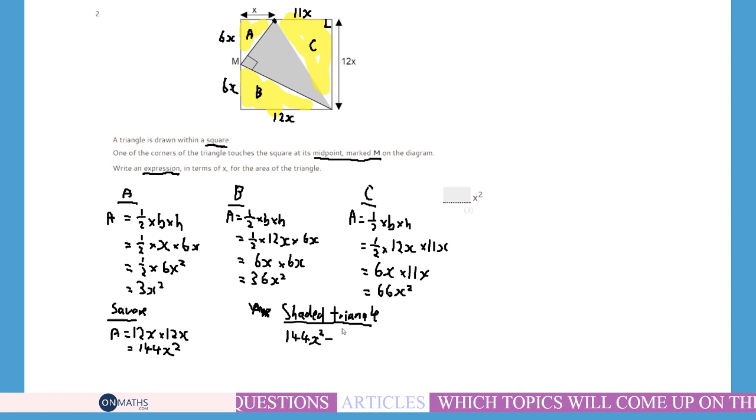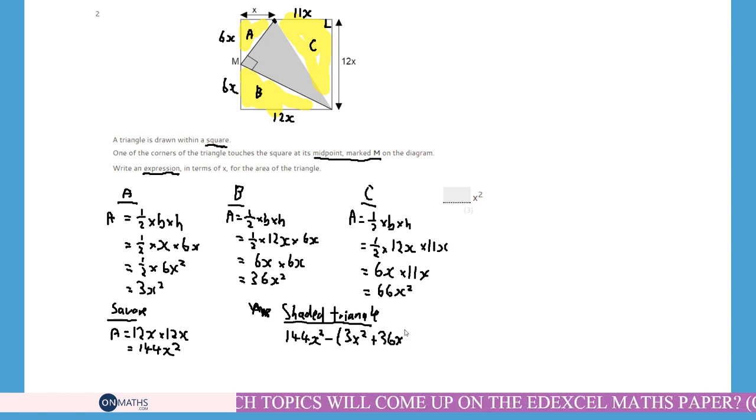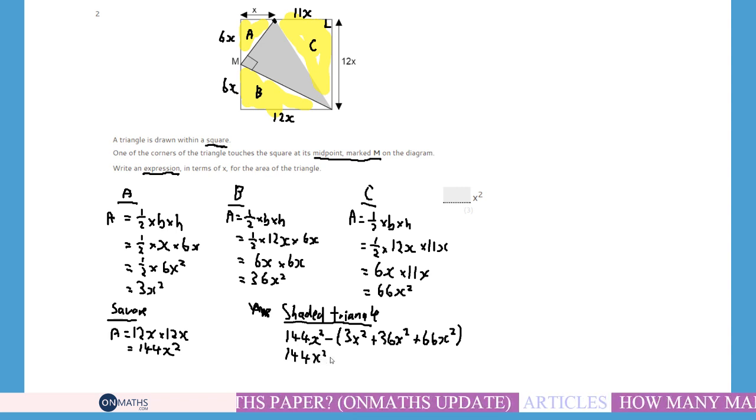So, 3X squared plus 36X squared, I should say, plus 66X squared. That would leave this triangle here. If I work out the area of the whole thing, take away the shaded ones, all I'll be left with is this shaded one here. So, 144X squared, take away, and now I need to add these together. So, 66, 36, and 3. 6 plus 6 is 12. And that plus 3 would be 15. Carry the 1. 6 plus 3 is 9. Plus the 1 is 10. So, it's 105.